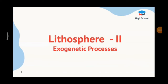Geography 2nd Lesson: Lithosphere 2 — Exogenetic Processes. The earth is a dynamic system that undergoes various changes due to internal and external processes. The continuous interaction of these two processes controls the structure of the earth's surface. The external processes are consequences of solar energy and gravitational forces, while internal processes are an outcome of the earth's internal heat.